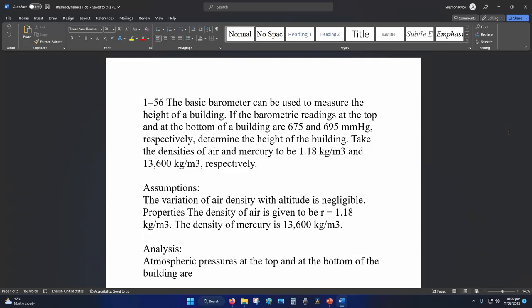Hey internet, welcome to Thermodynamics Tutorial 1-56. We have a pressure difference of 675 and 695 millimeters of mercury. Find the height of the building.